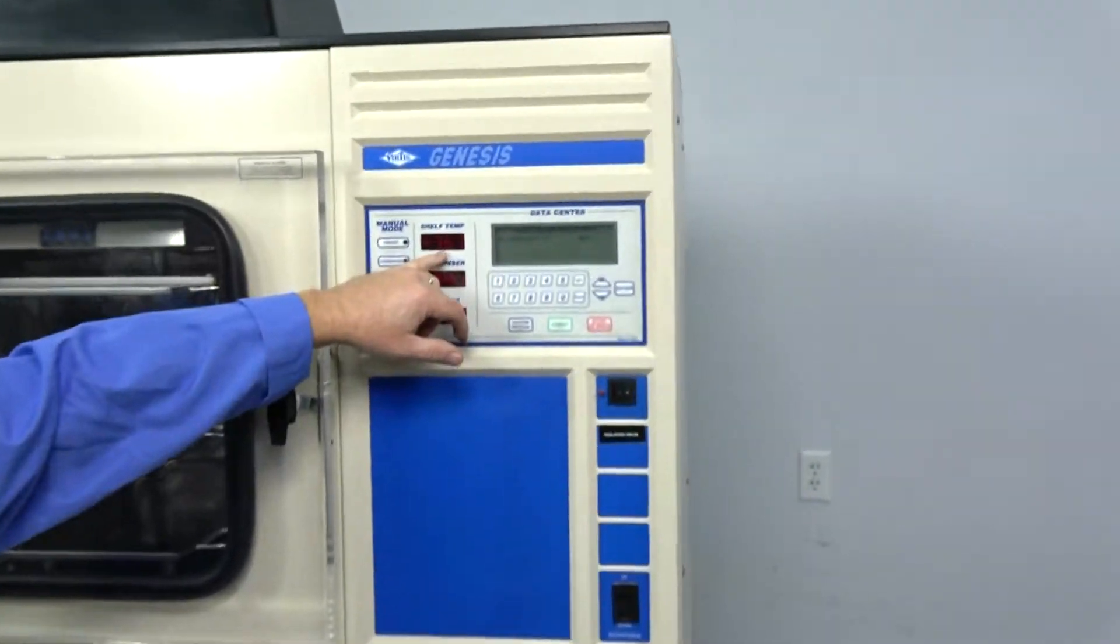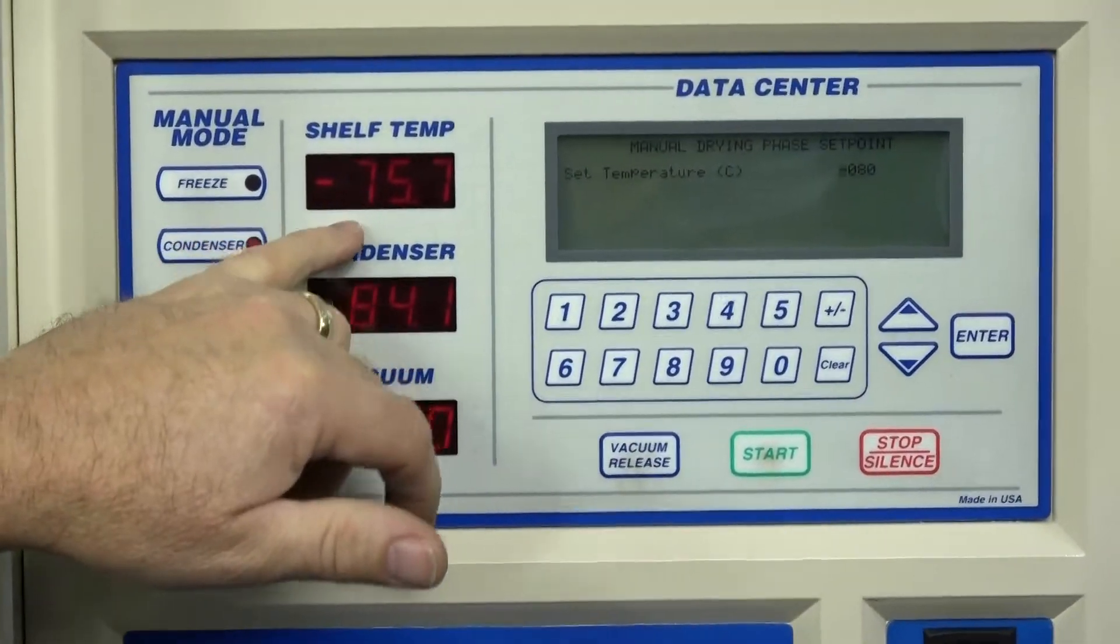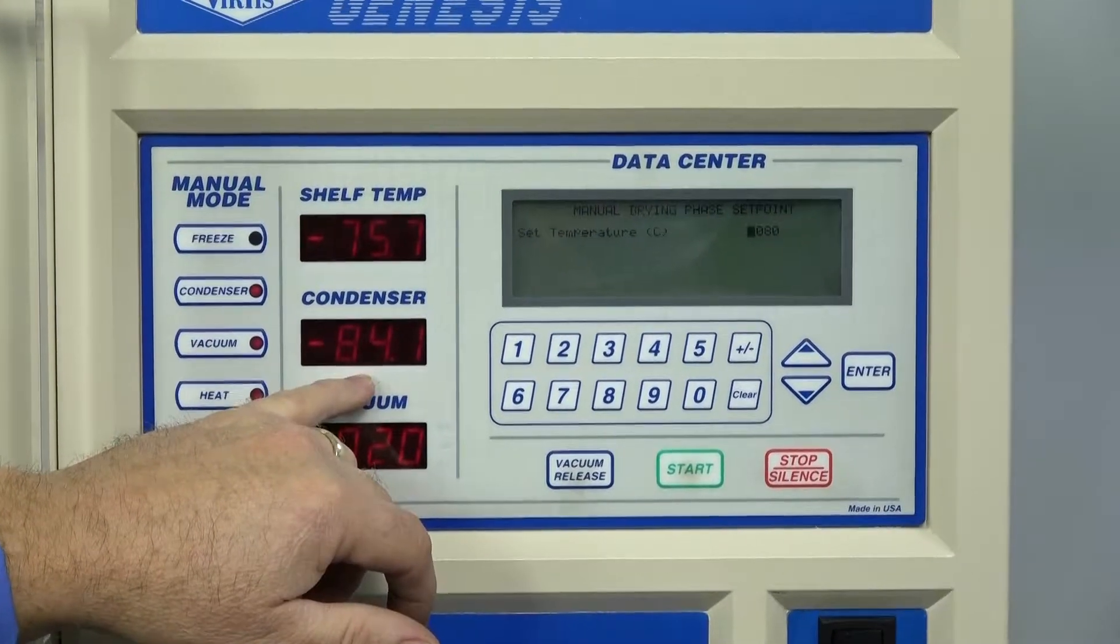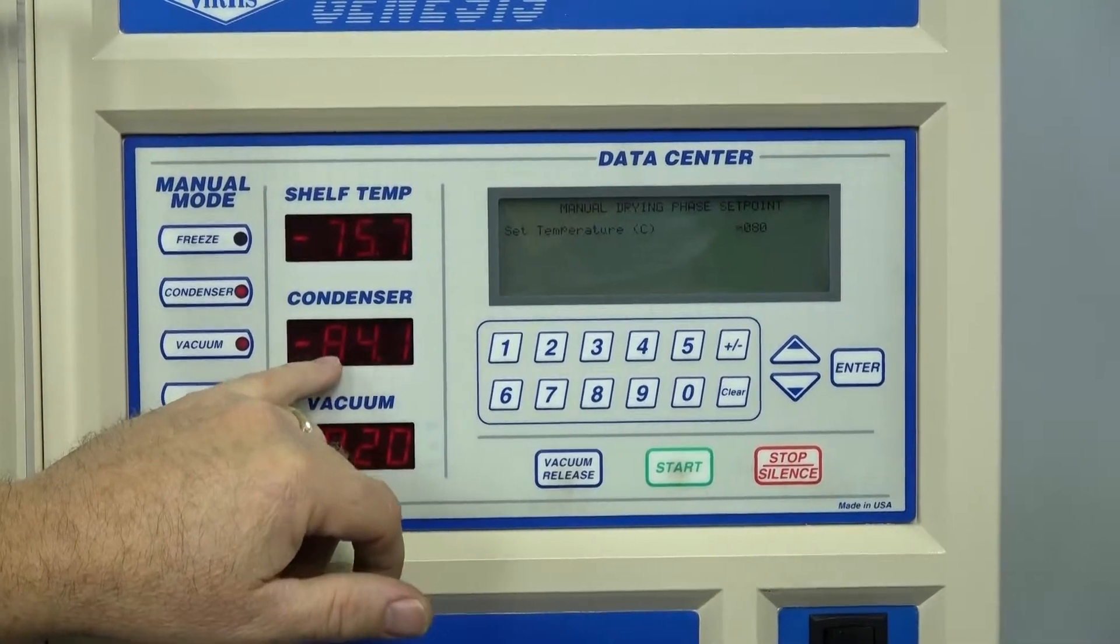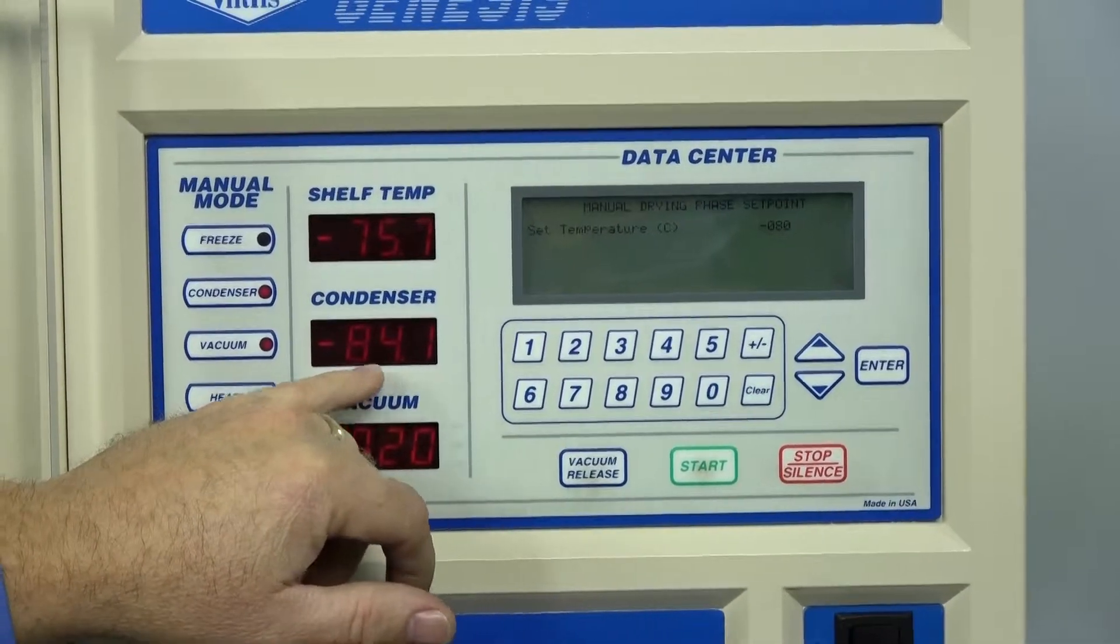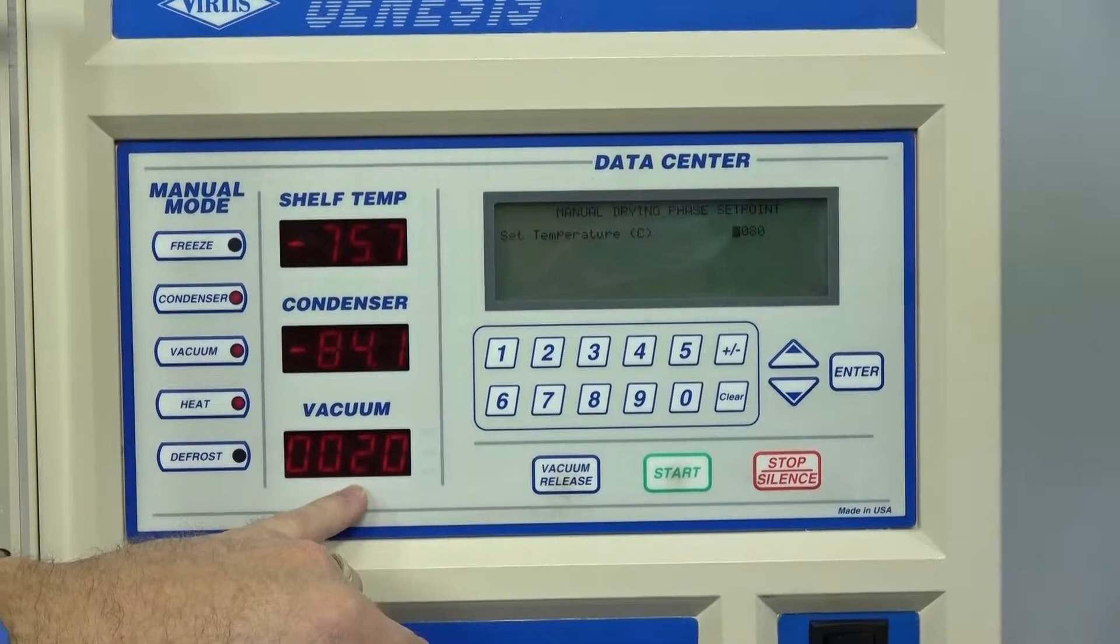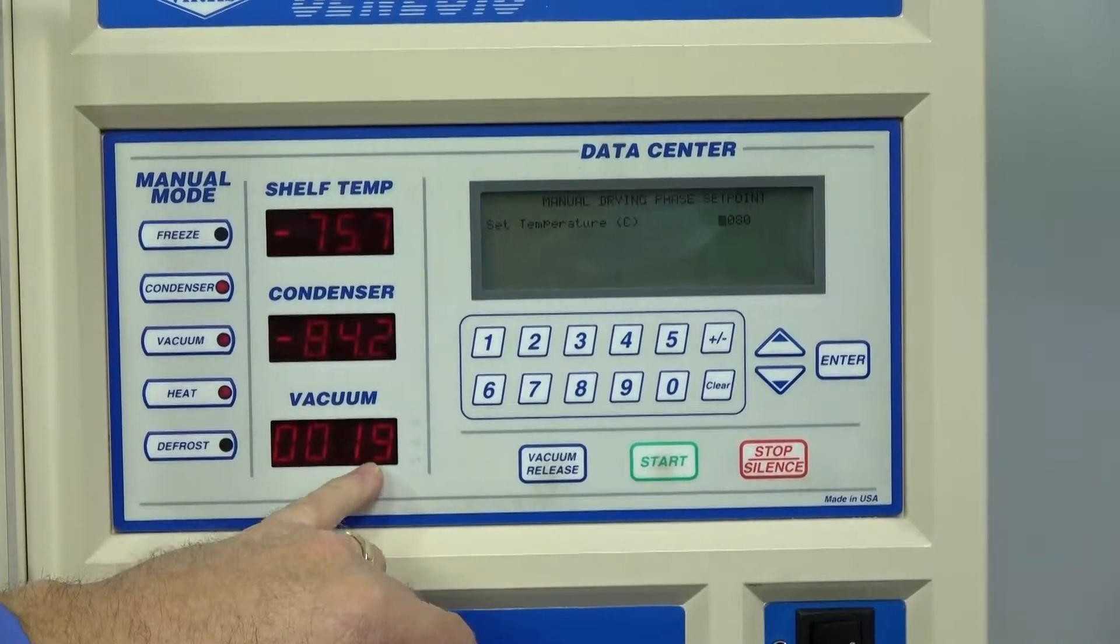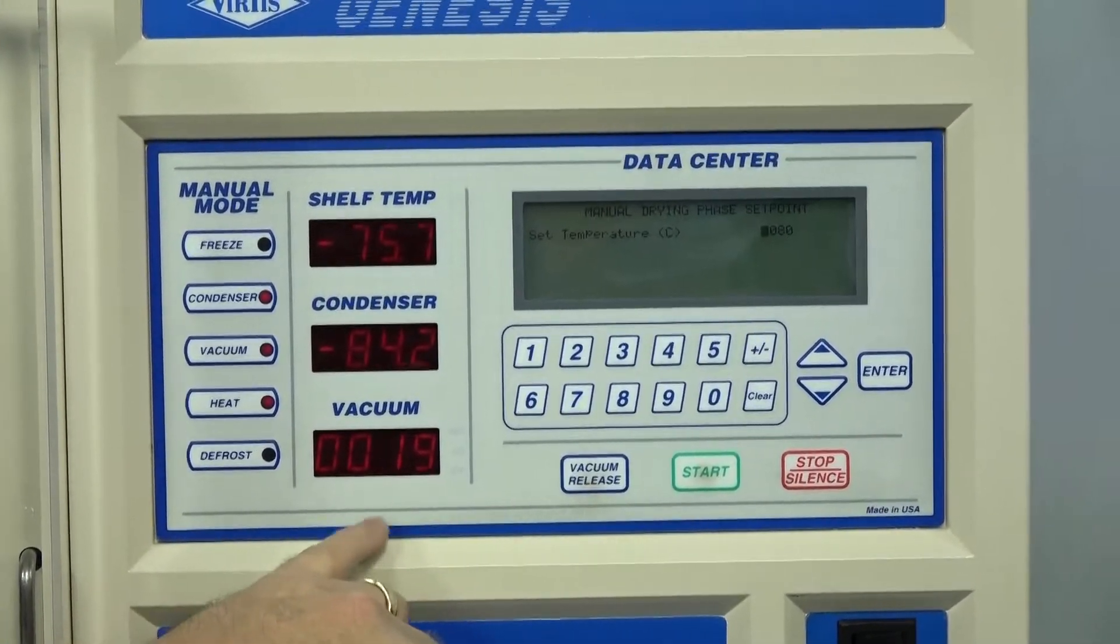As you can see, we are at negative 75 on the freeze part of the shelves, and that's what the factory spec is. We're at negative 84, which is still dropping. I think these run about negative 83 to 85, so we're at factory spec there. And we're at the 20, we're still dropping on the vacuum. You can see when we started here, it's still dropping. It definitely gets down to the factory spec too.